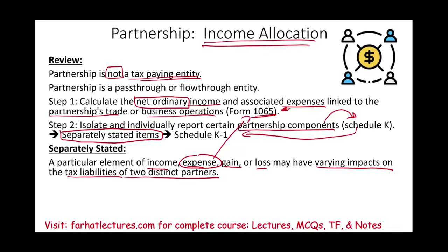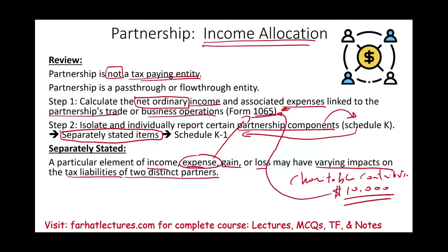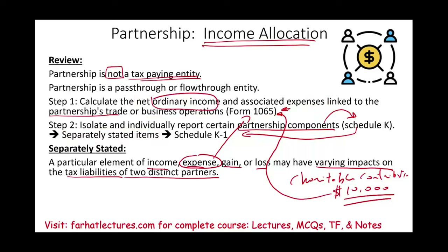The most obvious example: let's assume we have a charitable contribution. The business, the partnership, contributed $10,000 to a charity. How do we deduct this $10,000? If we deducted it on Form 1065, then this $10,000 is buried within the income and expenses of the business and affects both partners the same way, because at the end of the day the partners would look at ordinary income that included the $10,000.